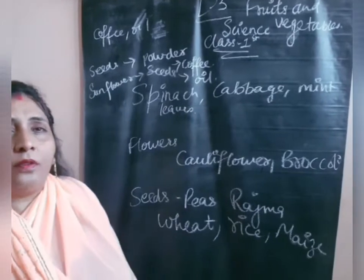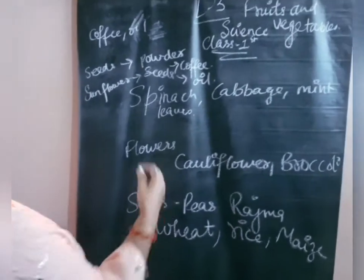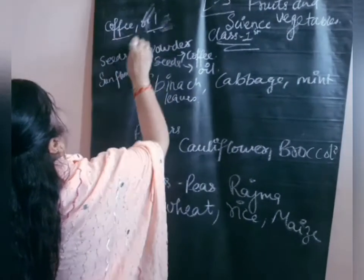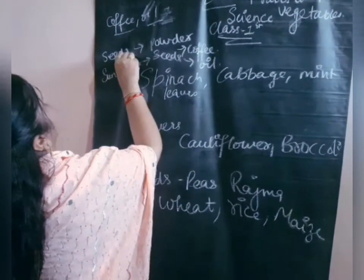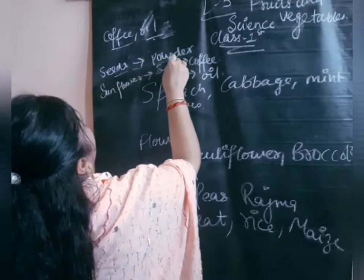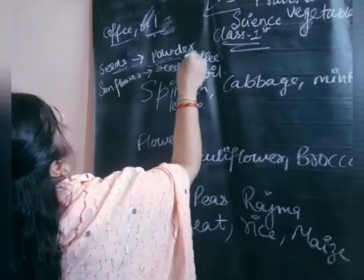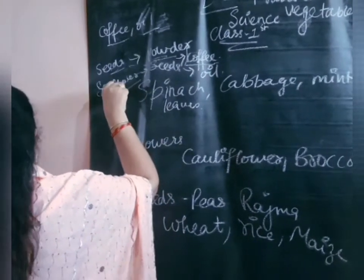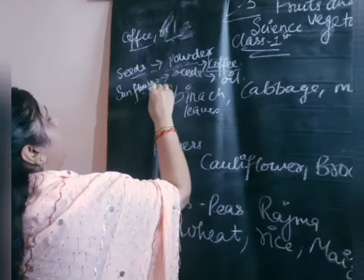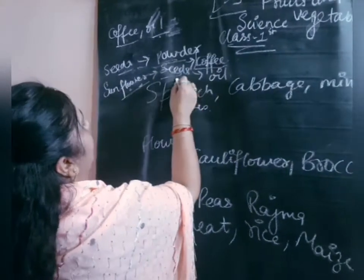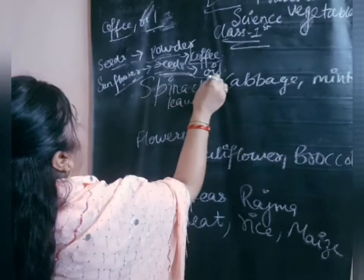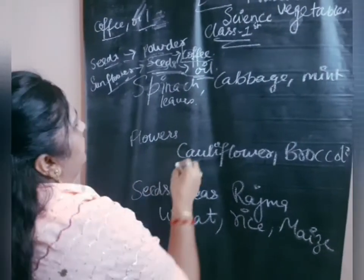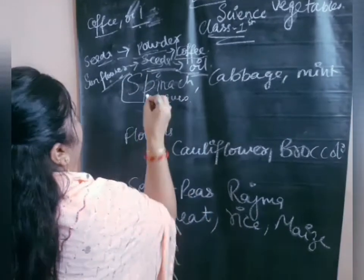We also get useful things from plants. We get coffee from plants — seeds are crushed into powder and then we get coffee. We also get seeds from sunflower, and when we crush these seeds we get oil.